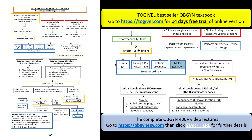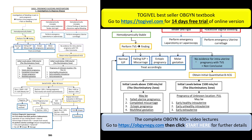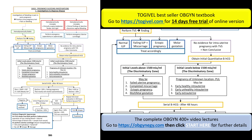The problem arises when there is no evidence of intrauterine pregnancy on TVS and the TVS is non-conclusive — you cannot diagnose an ectopic pregnancy and cannot see a molar gestation. In this case you need something else to determine the condition of the pregnancy, so you obtain an initial beta-hCG quantitative level.